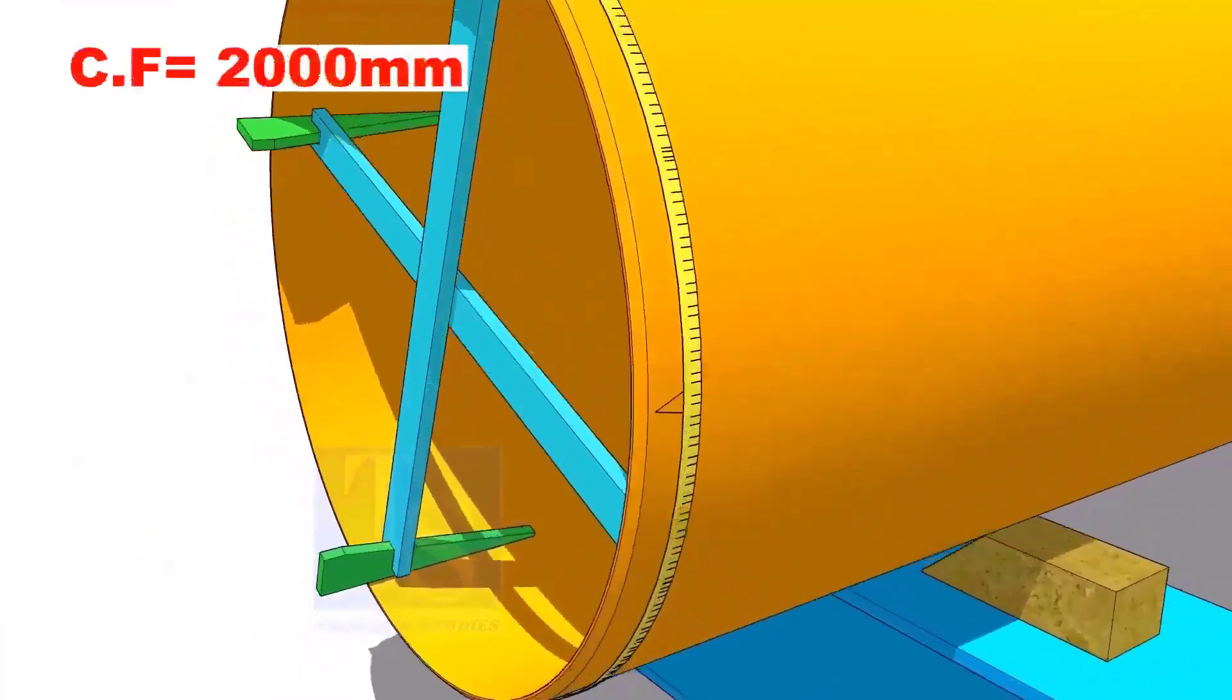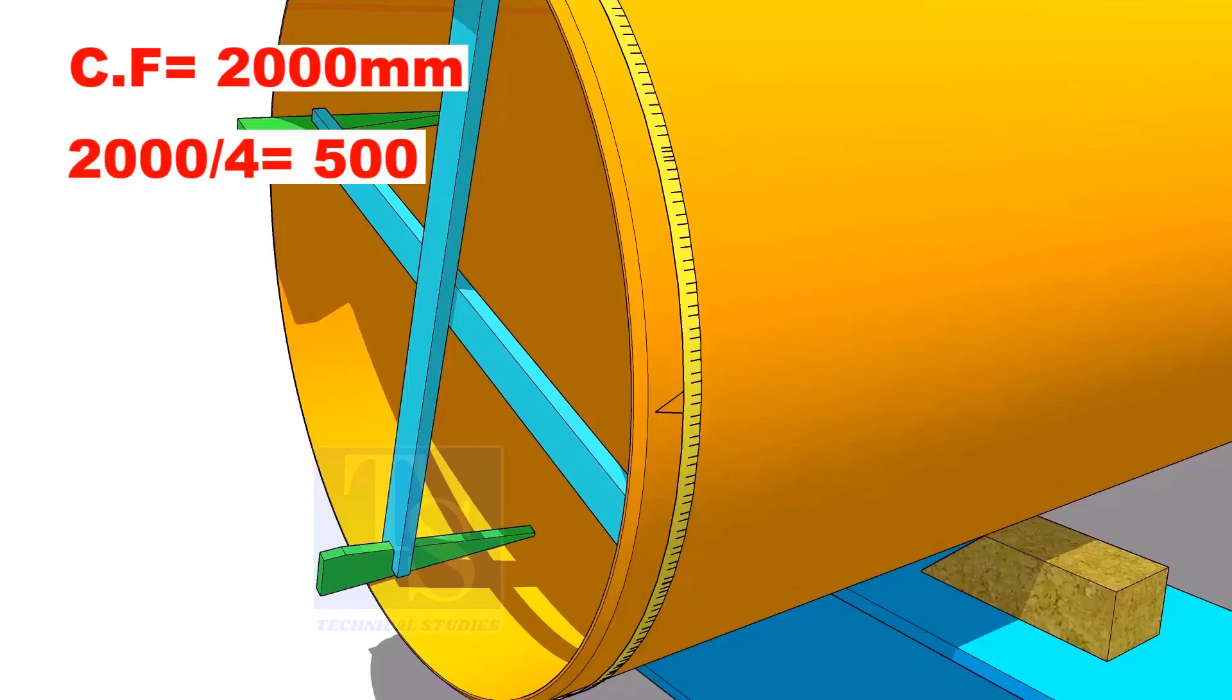Assume that the circumference is 2000 millimeters. Divide it by 4. Now you have the arc length of 90 degrees.